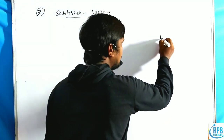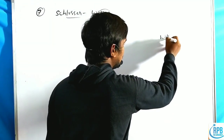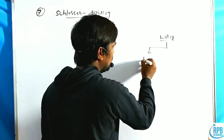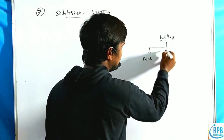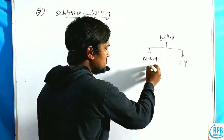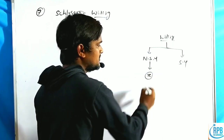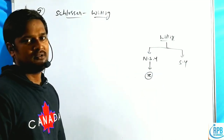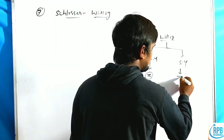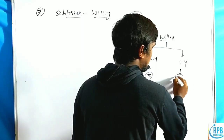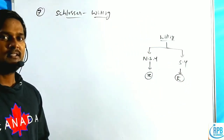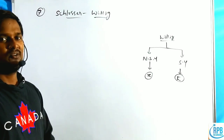So in the Wittig reaction, the stereochemistry with non-stabilized ylides will give us the Z isomer as the major product. Stabilized ylides will give us the E isomer as the major product. Now sometimes, when polar solvents are present, it will convert into the Z isomer.